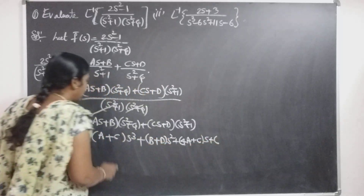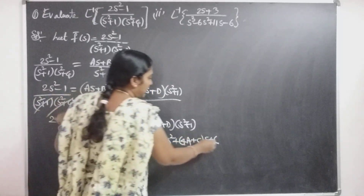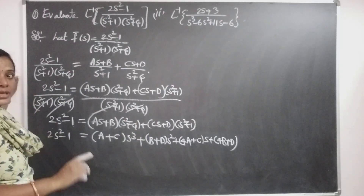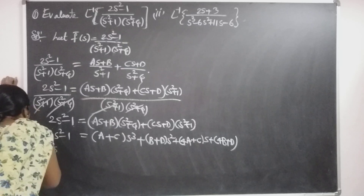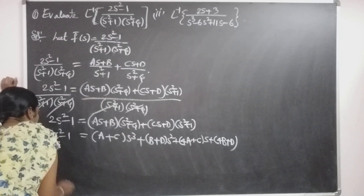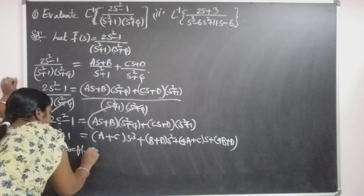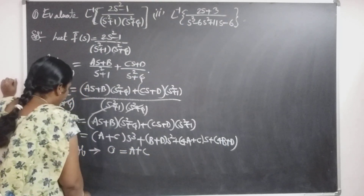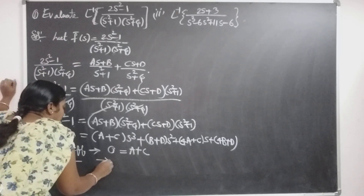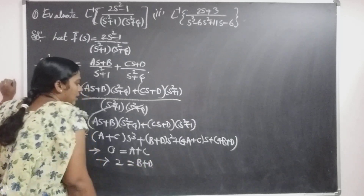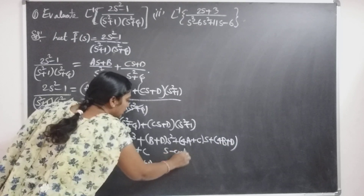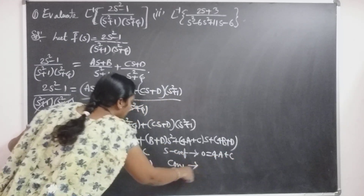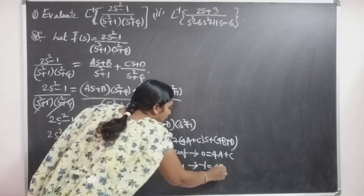The s term gives 4A + C, and the constants give 4B + D. The left side is 2s² − 1. Comparing both sides: s³ coefficients: 0 = A + C. s² coefficients: 2 = B + D. s coefficients: 0 = 4A + C. Constant terms: −1 = 4B + D.